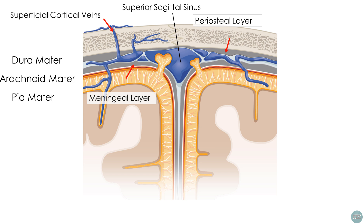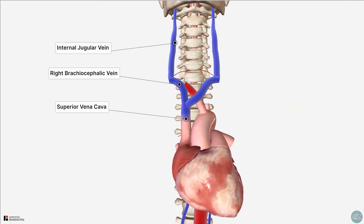Superficial veins from the brain surface drain into these sinuses, with the ultimate endpoint for drainage being into the internal jugular vein. In addition, CSF is drained into the venous sinuses via arachnoid granulations. The jugular vein returns blood to the right side of the heart via the innominate or brachiocephalic veins on either side.